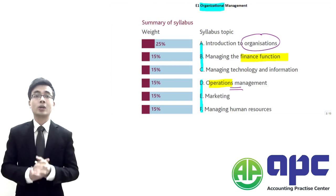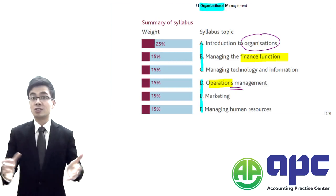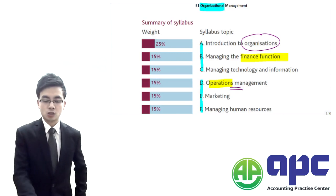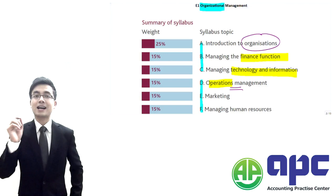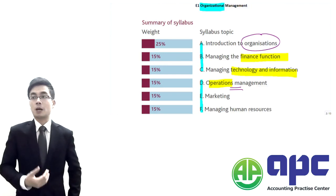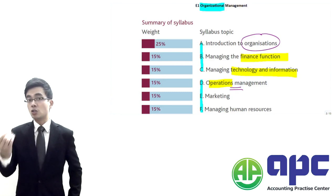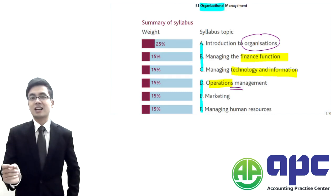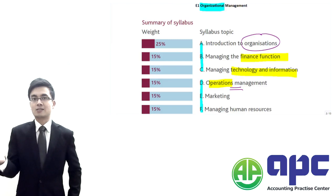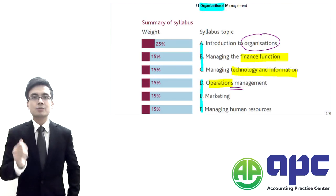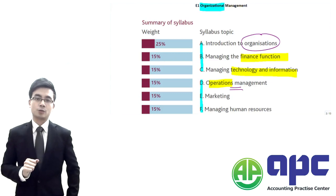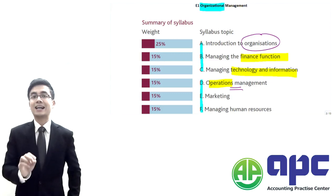Nowadays, we tend to use the ERP system, which is a computerised system, to try to deal with different transactions. How we're going to manage the IT — the information as well as the technology — is absolutely important nowadays. The information may be updated, so you're going to replace your current systems with a new system. If you're going to use a new system, you need to understand the costs associated with the system against the benefits you can get. It's absolutely important that you undertake a feasibility study regarding the system itself. That's Section C, where you manage IT within your organisation.